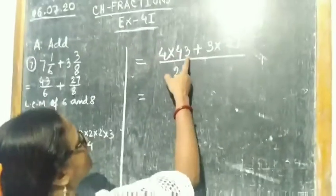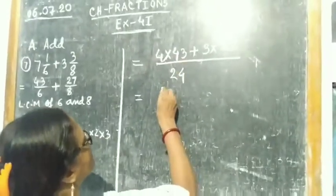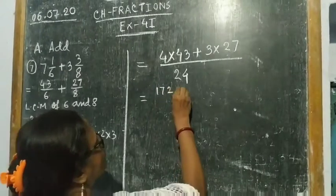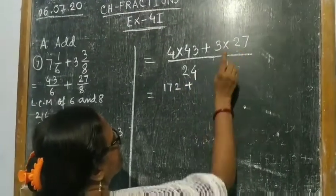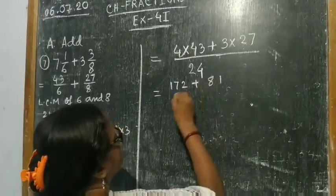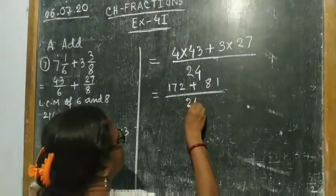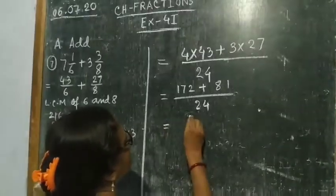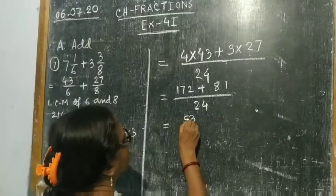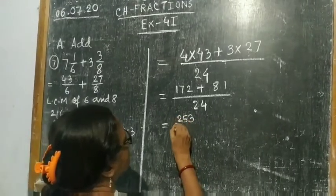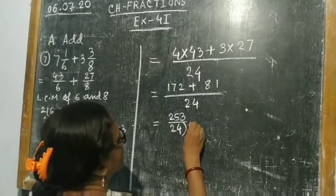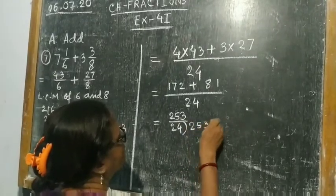So 4 into 43: 4 into 4 is 16, carry 1, so 172. Plus 3 into 27: 3 into 7 is 21, carry 2, 3 into 2 is 6 plus 2 is 8, giving 81. So 172 plus 81 by 24. Adding: 2 plus 1 is 3, 7 plus 8 is 15, carry 1, 1 plus 1 is 2. So 253 by 24.